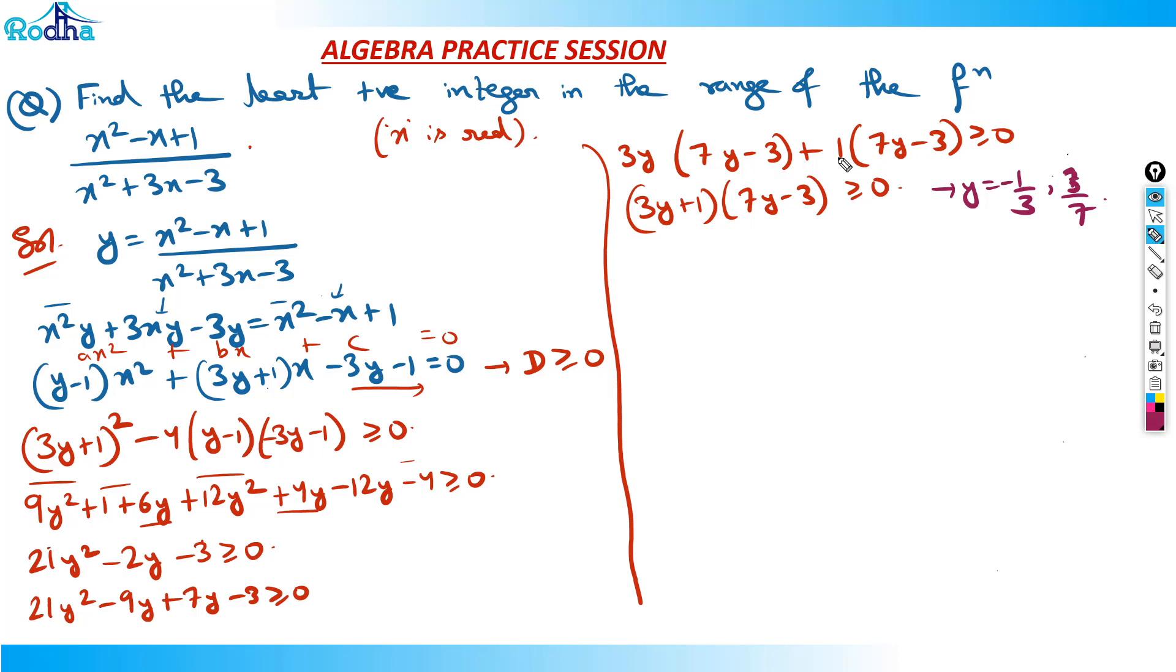It is greater than equal to 0, so we already know now. We have done many times, right? It should be left side of the smaller root and right side of the bigger root. So basically, if I draw this also, I can draw the number line also: minus 1 by 3 and 3 by 7. Basically, this side positive, negative and positive. So x belongs to minus infinity to minus 1 by 3 union 3 by 7 to infinity. That should be the answer of this question.